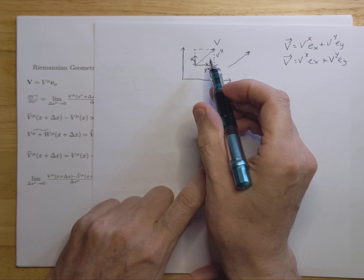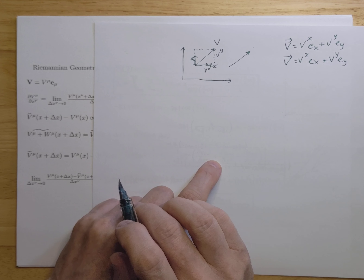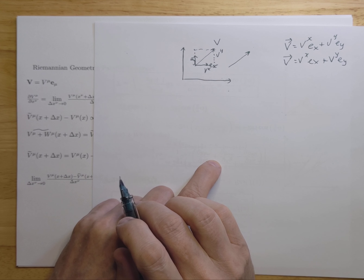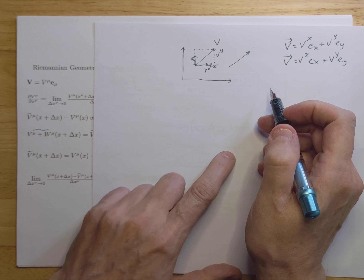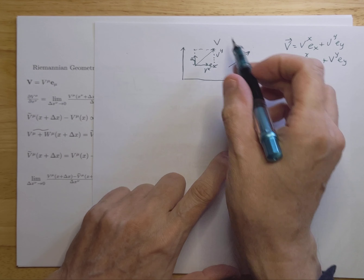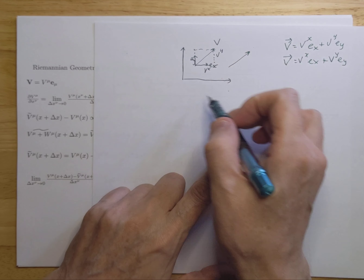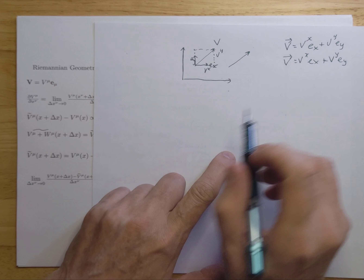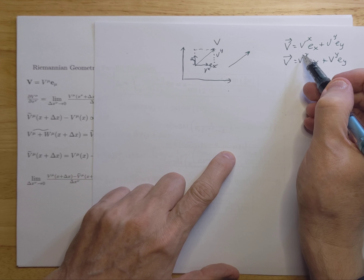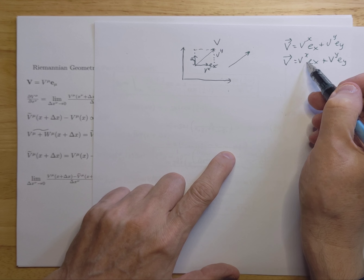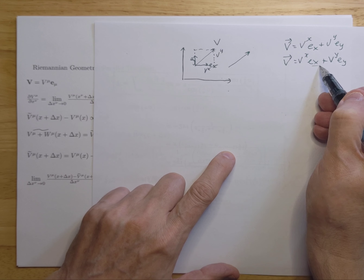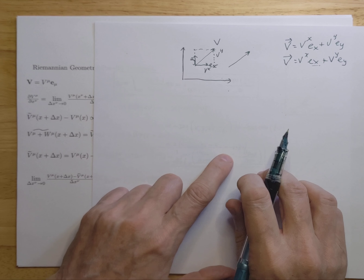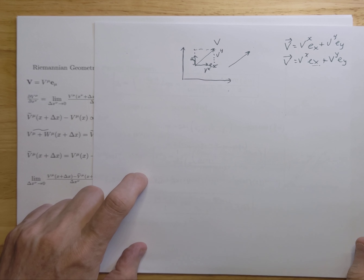If you parallel transport this vector in Euclidean space, it will not change. In curved spacetime, that's not the case. If you do this in curved spacetime, not only the vector components will change, but also the basis vectors will change — they will both change.